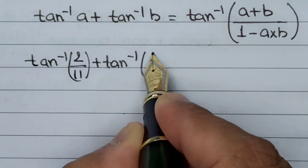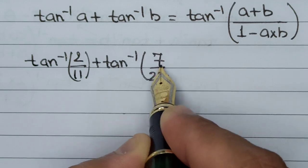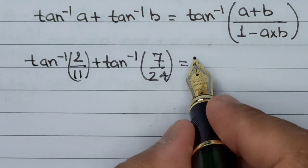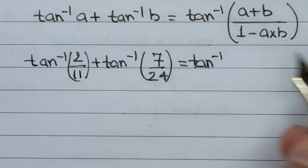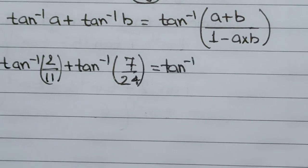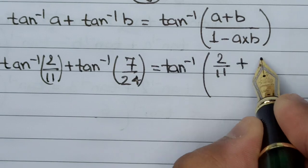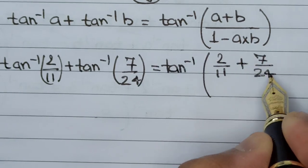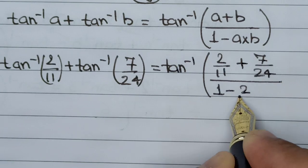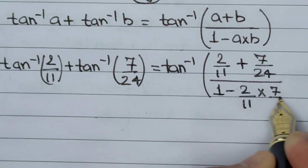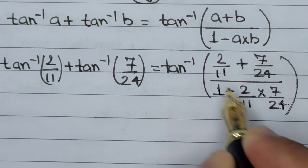Let's apply the values of a and b. This becomes tan⁻¹((2/11 + 7/24)/(1 - (2/11)(7/24))).